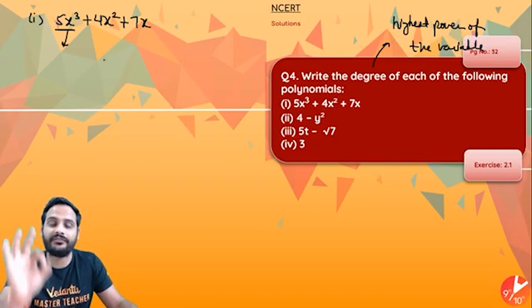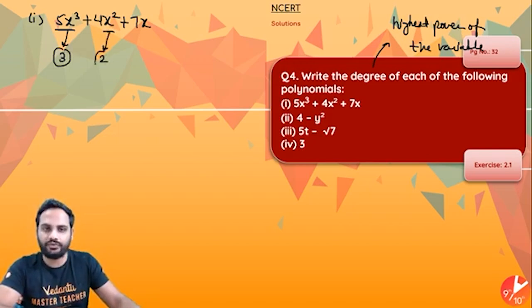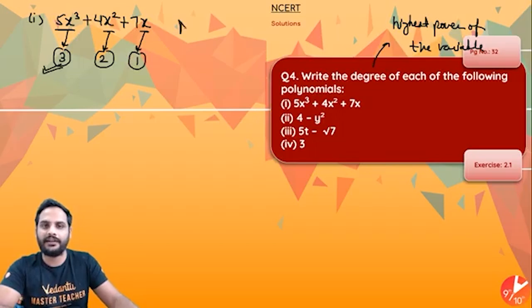Listen carefully. Power of the variable here is 3, power of the variable here is 2, and power of the variable here is 1. So highest power is 3, so I can say the degree of this polynomial is 3.